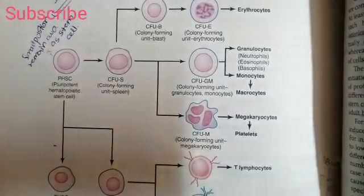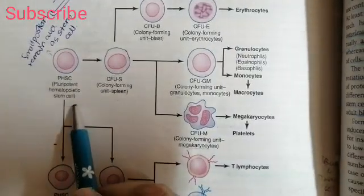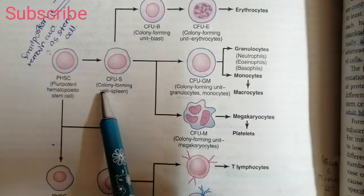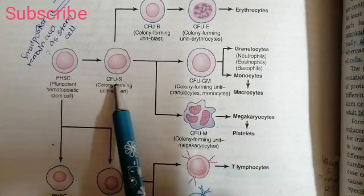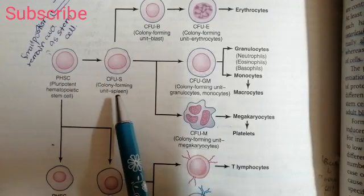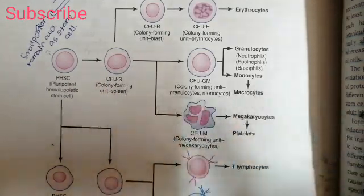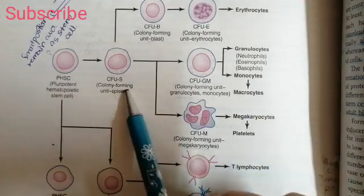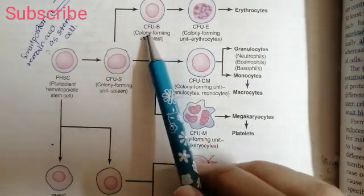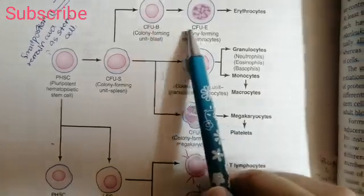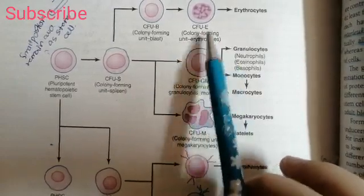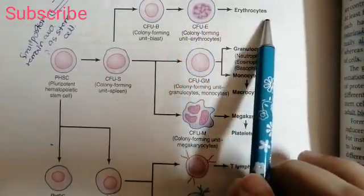Now coming to the different types of cell lineage, starting from the pluripotent hemopoietic stem cell. This stem cell present in the bone marrow first converts into the colony forming unit, which is a colony of different cells present in the spleen — as the spleen is involved in blood cell production during the third trimester of pregnancy. From these colony forming units, blast cells arise that are the precursors of erythrocytes, which are ultimately developed into the mature erythrocyte, the RBC.